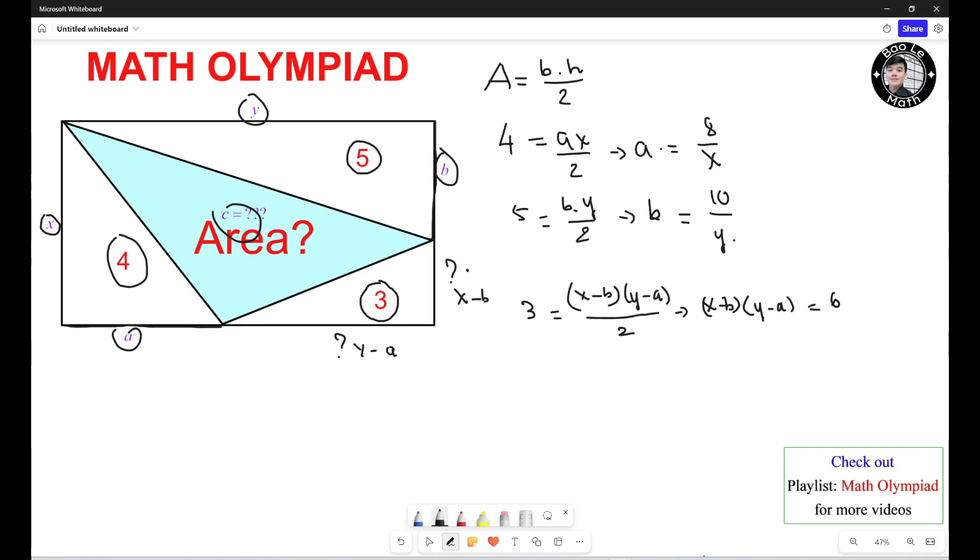Now I substitute A equals 8 over S, B equals 10 over Y. So I have S minus B equals 10 over Y, 10 over Y times Y minus A equals 8 over S equals 6. Alright. Now I know S and Y should be different from 0. Alright.